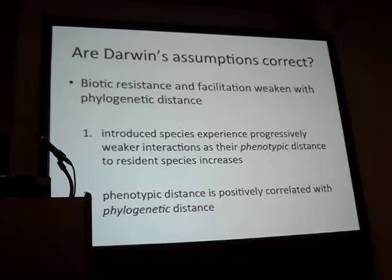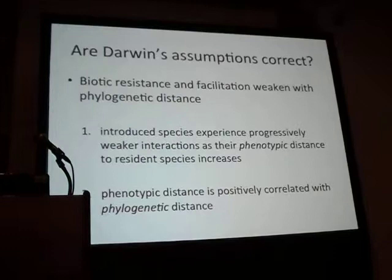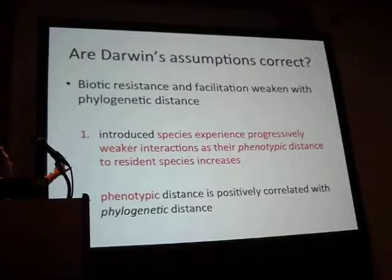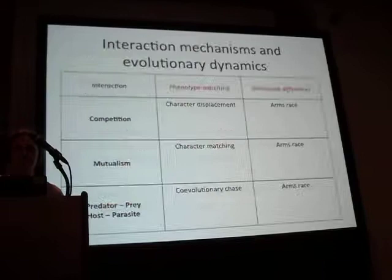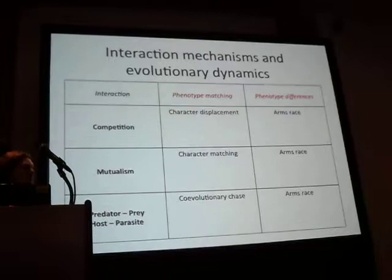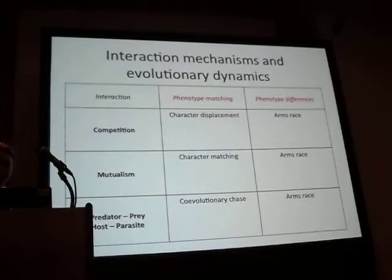There's been some recent question about whether that second assumption is true. I'm focusing mostly on the first assumption — looking at what kind of interaction we expect to see between phenotypic distance and the strength of interactions. While Darwin and many others focus on a mechanism called phenotype matching, there are actually two different ways that interactions can work across different types of ecological interactions.